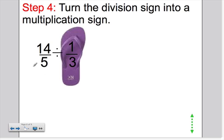So we've changed the mixed number into a fraction. We've changed the whole number into the fraction. We've flip-flopped the second fraction. And now I need to take this division sign, and instead of dividing, we're going to multiply instead.